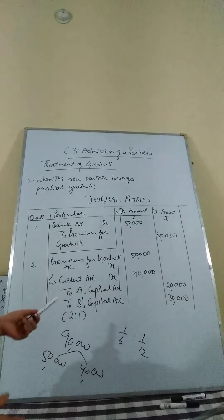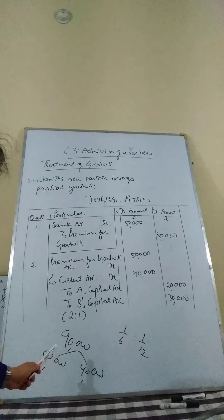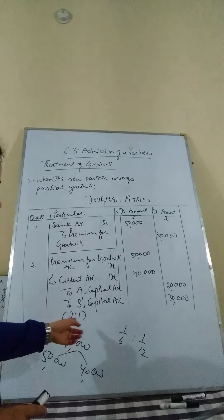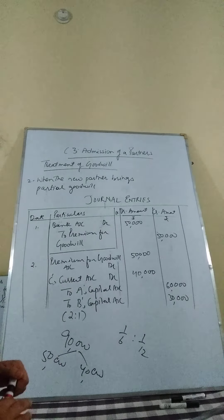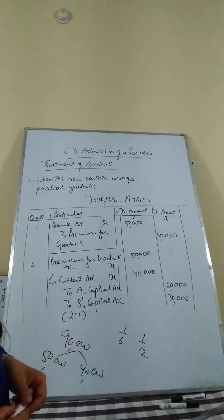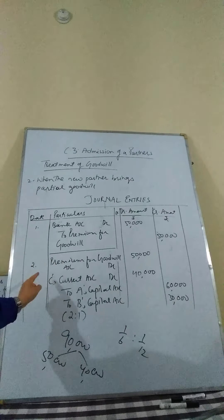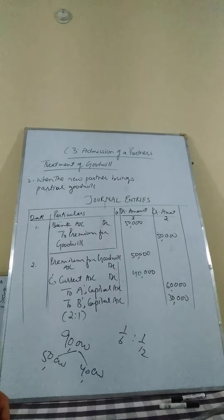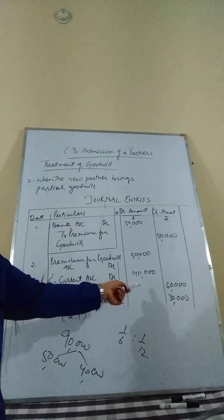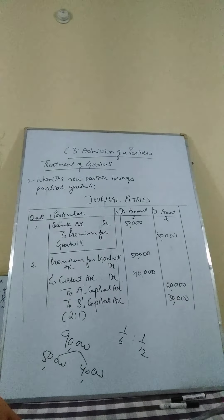So, A's capital gets 60,000 and B's capital gets 30,000. We apply the 2:1 ratio to the entire share of the admitting partner's goodwill, which is supposed to be 90,000 — not just the 40,000 balance. To recap: Bank to Premium for Goodwill for the goodwill actually brought in cash; Premium for Goodwill Account debited; C's current account debited for the remaining 40,000; and A and B's capital accounts credited in the sacrificing ratio. I hope this is clear — see you in the next segment.